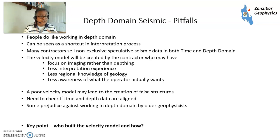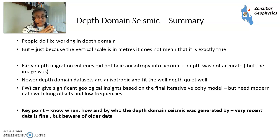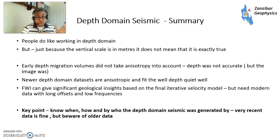The key point is: who built the velocity model and how? If you work closely with the processing house to build the velocity model as an interpreter, that's great. If you have a full waveform inverted velocity model, that's even better. But if it's an older dataset and you don't know where it came from or why it was made, be very aware. Just because the vertical scale is in meters doesn't mean it's exactly correct. Early depth migration volumes didn't take anisotropy into account, so depth was not accurate — people knew how to correct for that, but those who haven't grown up with it may not.